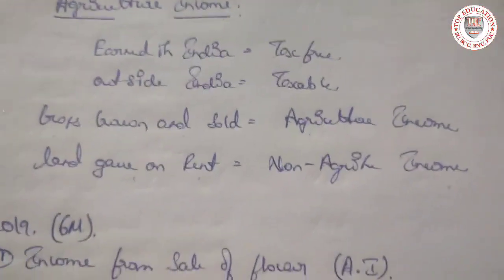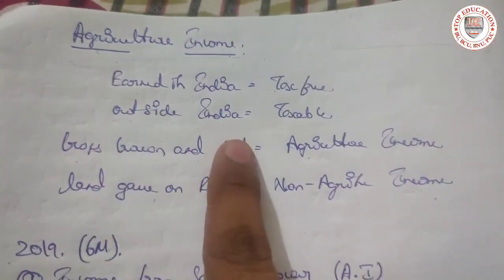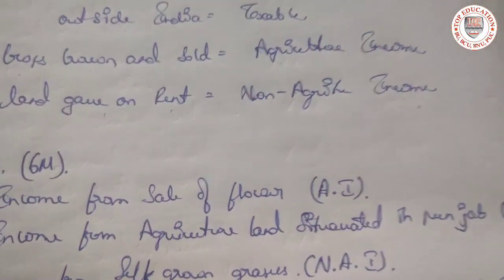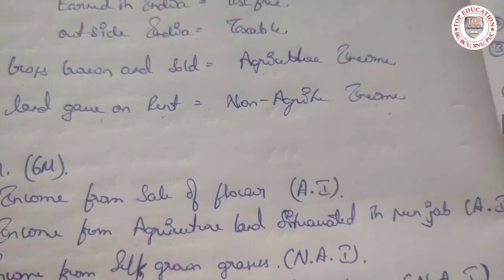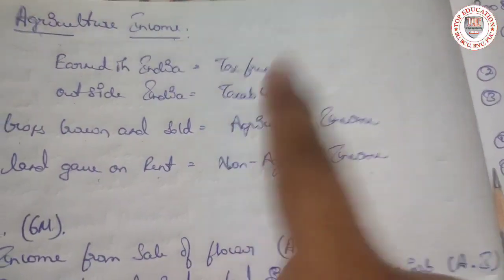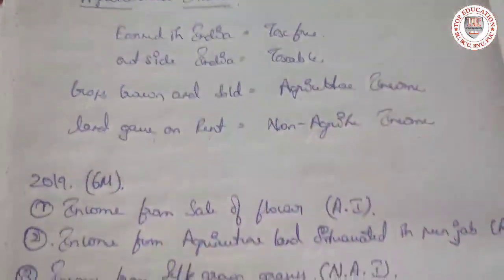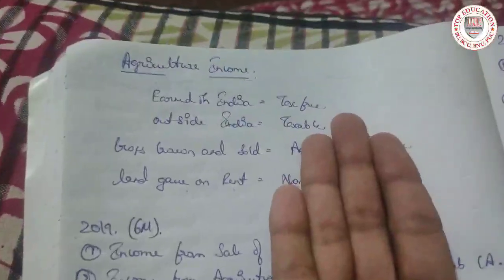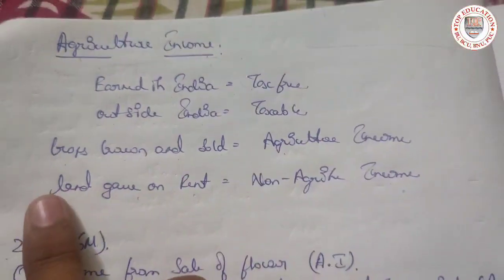For example, the income earned in India is tax free. If we are receiving money from outside India — say I did farming in America but I am receiving that amount in India — that is taxable. Crops grown and sold: we are growing the crops and selling the crops, so that is agriculture income.